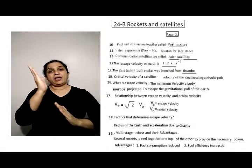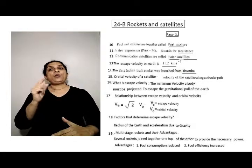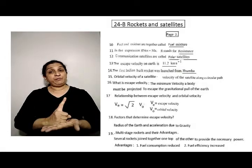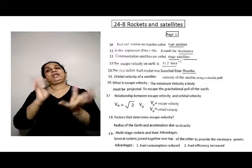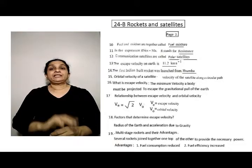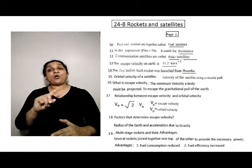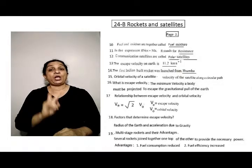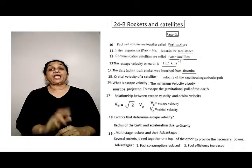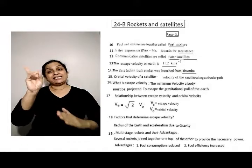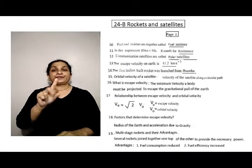Sixteen, what is escape velocity? The minimum velocity a body must be projected to escape gravitational pull of the earth. Seventeen, the relationship between escape velocity and orbital velocity, VE is equal to root 2 times VO. VE is the escape velocity, VO is the orbital velocity.